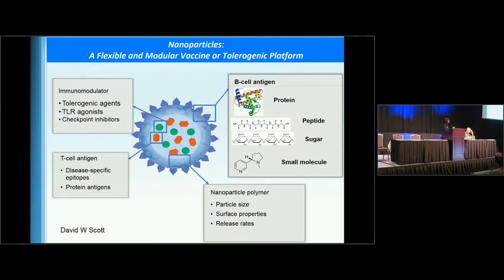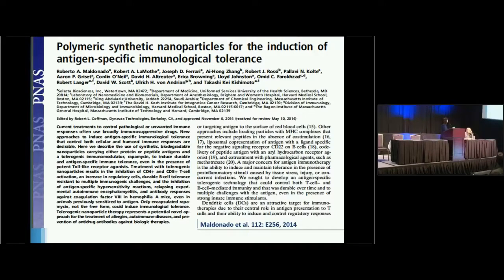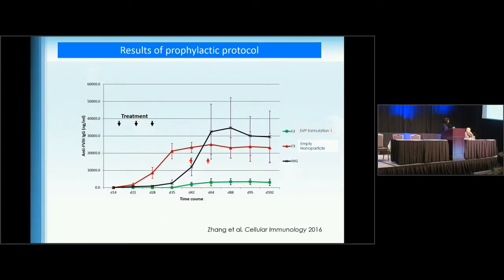Another method, courtesy of David Scott, uses a nanoparticle strategy where you can include different proteins or antigen peptides, together with tolerogenic agents, to induce tolerance. A recent paper used nanoparticles that encapsulate rapamycin together with a factor VIII peptide, which induced tolerance in hemophilia A mice. The results show a very strong immunomodulatory effect using the nanoparticle strategy.